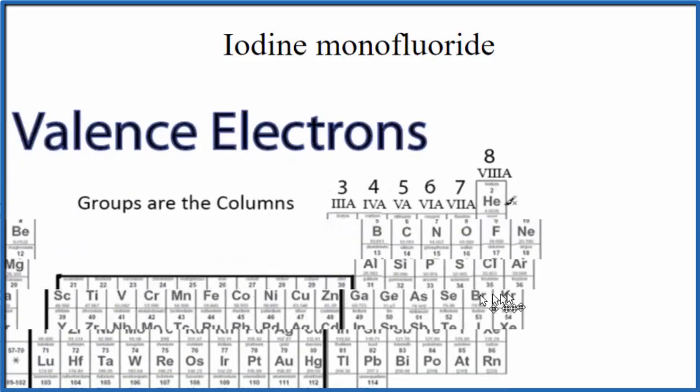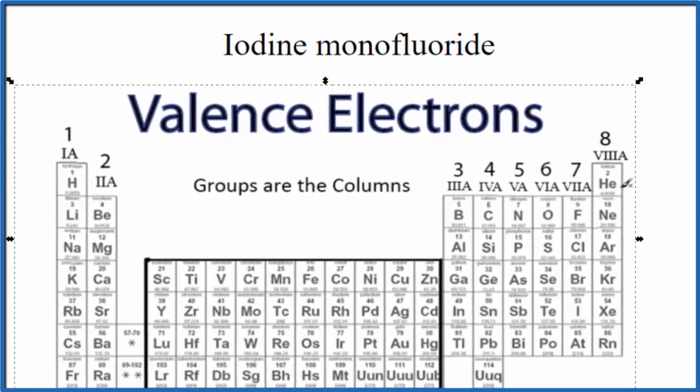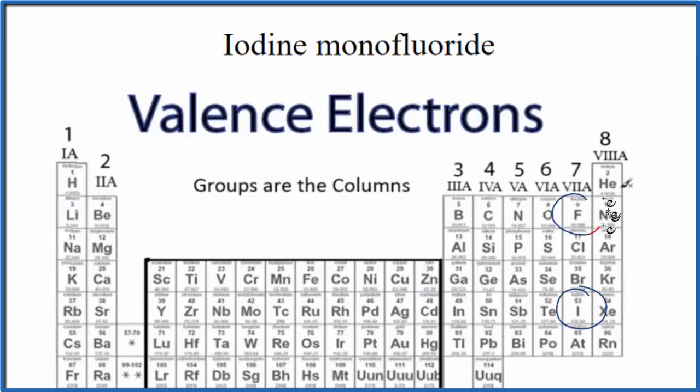To do that, we could look at the periodic table and find iodine and fluorine. They're both in the same group. So here's iodine and here's fluorine.